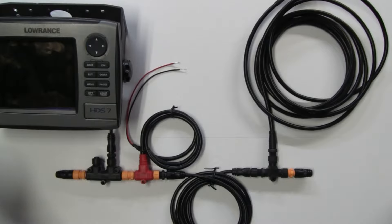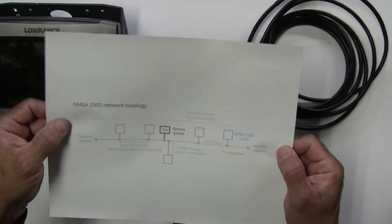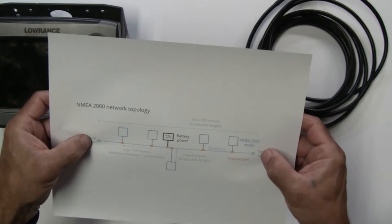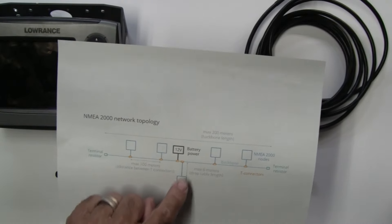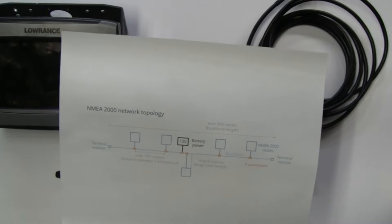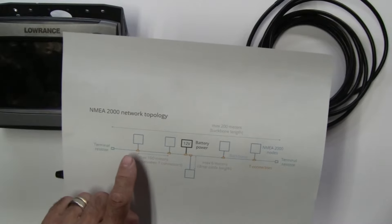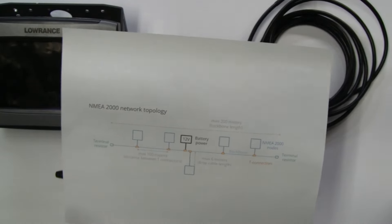Let me show you a diagram of what an NMEA network might look like and the lengths that are involved. So you can see the overall length is 200 meters for the backbone, that's end to end from terminal resistor to terminal resistor. The drop cables to the devices or nodes as they're called is a maximum of six meters, which is fairly significant. And then the max distance between T connectors is going to be 100 meters.